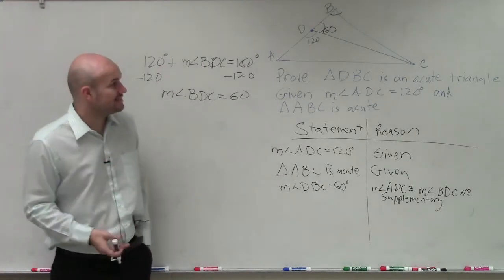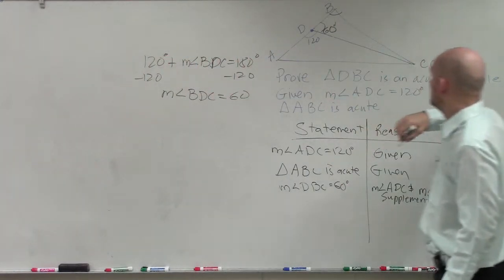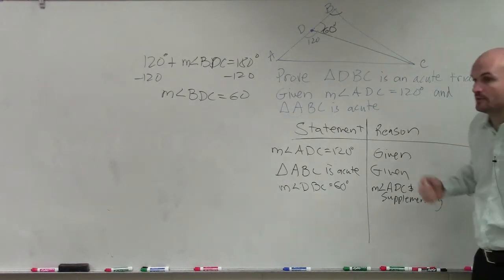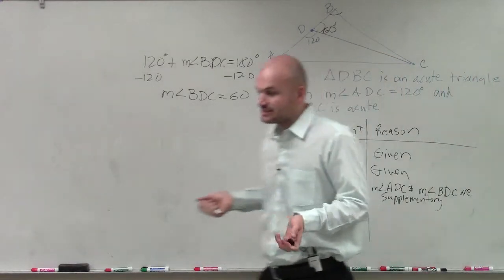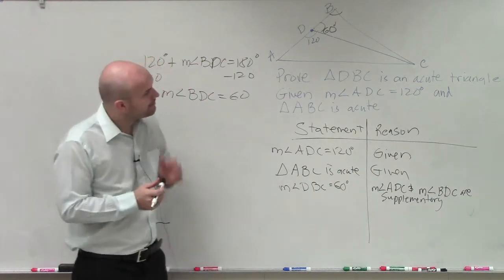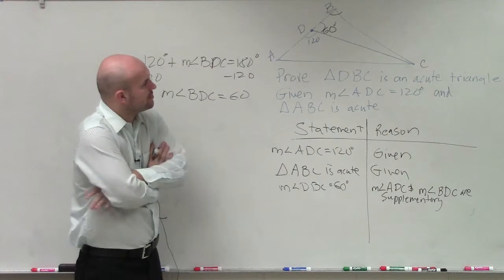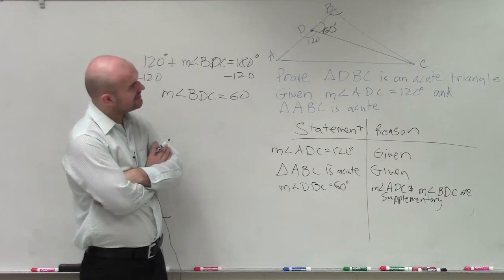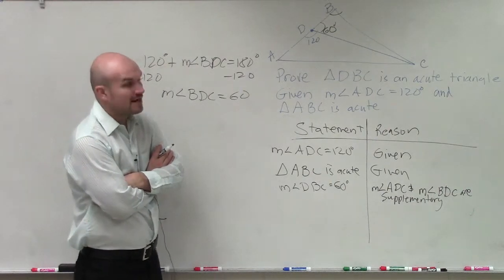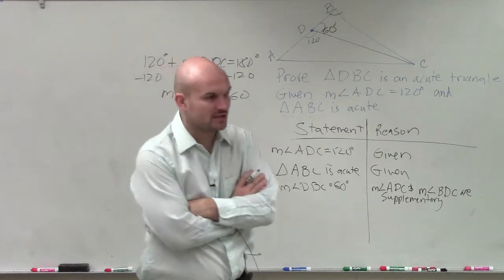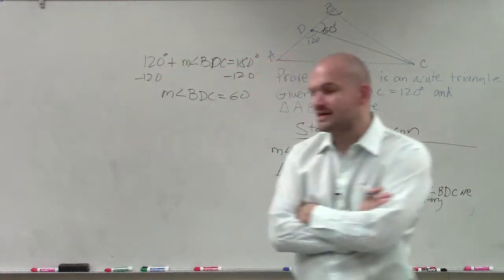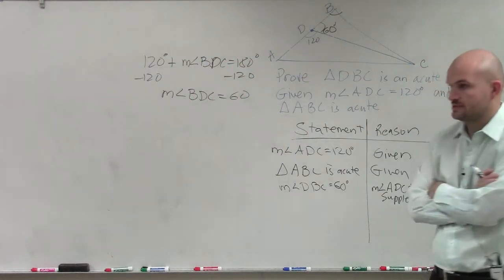We know that that's 60 degrees. We don't know, and we know that DBC is an acute angle, but we don't know what the measurement is of each one of these. So let's see. We have given measure of angle ADC is 120. Prove that DBC is an acute triangle. Now, remember, the difference isn't an acute triangle. It has to have three acute angles, right?